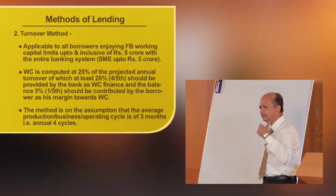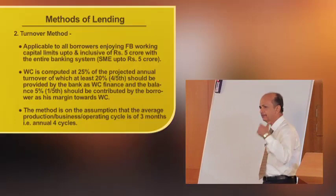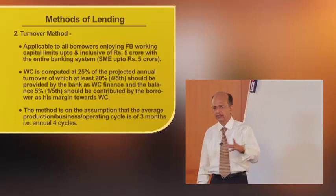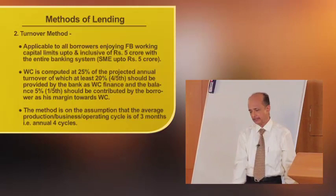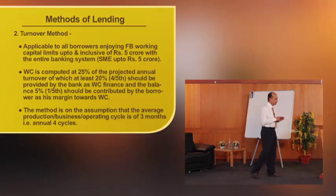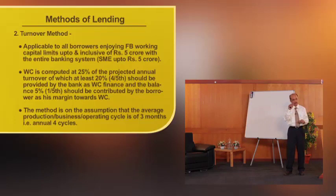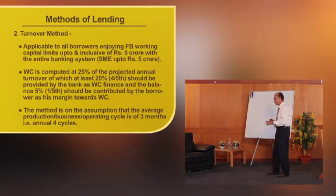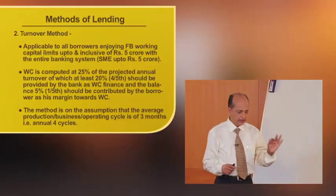Under this turnover method, as mentioned, it is really an improvement of the NIA committee recommendations — that is, working capital is assessed based on turnover. The working capital requirement of a unit is computed at twenty-five percent of the gross turnover, of which four-fifths — that is twenty percent of the gross turnover — is to be taken as the bank finance, and five percent goes towards the promoter's contribution, also called net working capital or NWC.